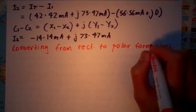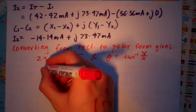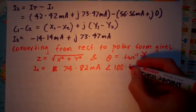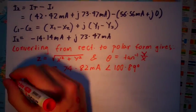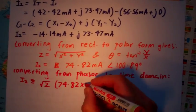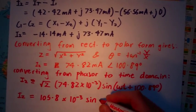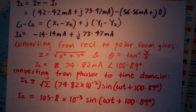We then convert back from rectangular to polar form, and then from phasor to time domain. This gives us a final expression for the current waveform.